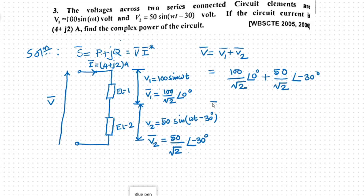Now, this can be written as follows: 100 by root 2 cos of 0 plus j sin 0 plus 50 by root 2. Now, this can be written as cos of minus 30 degree plus j sin of minus 30 degree.